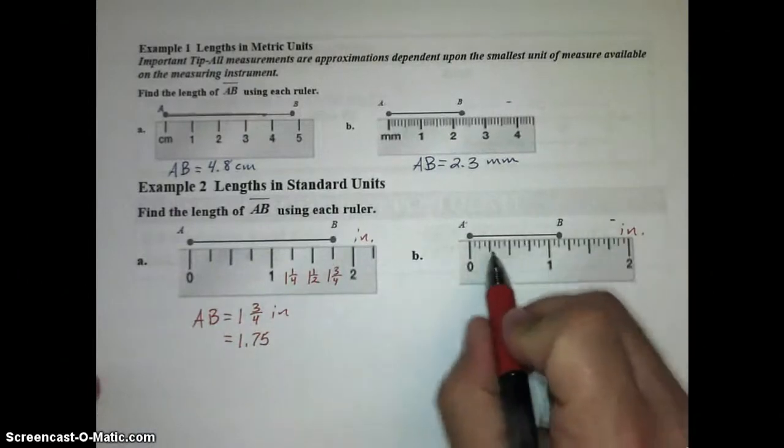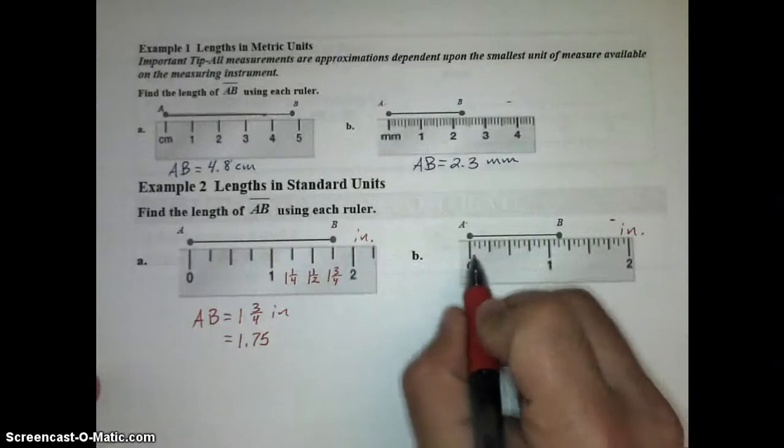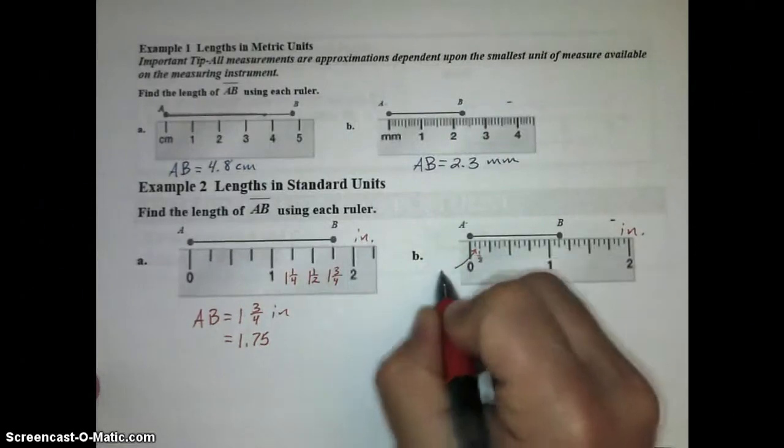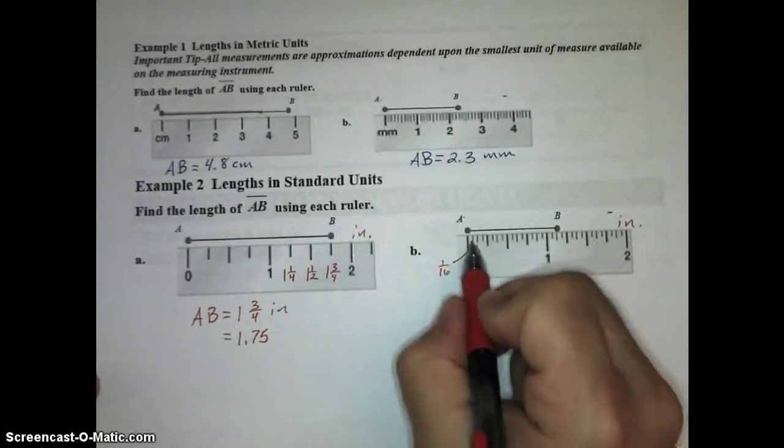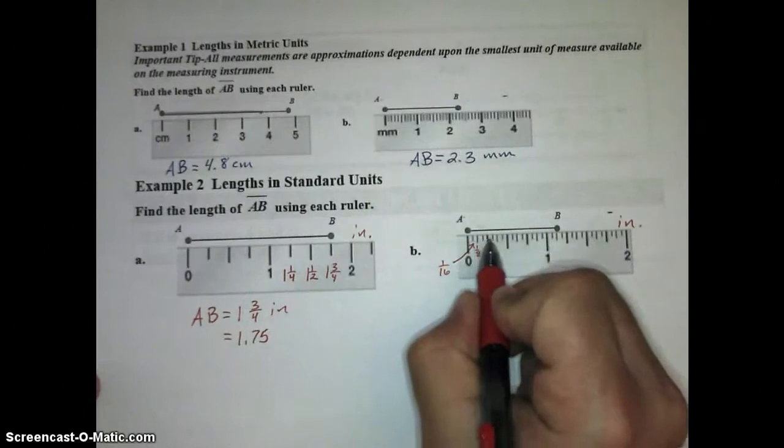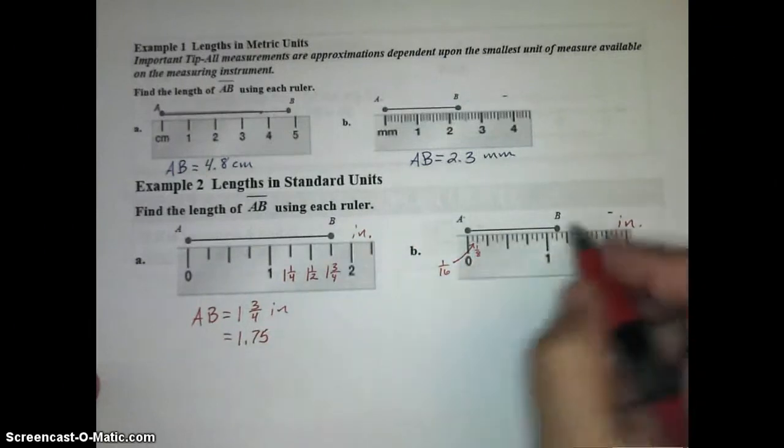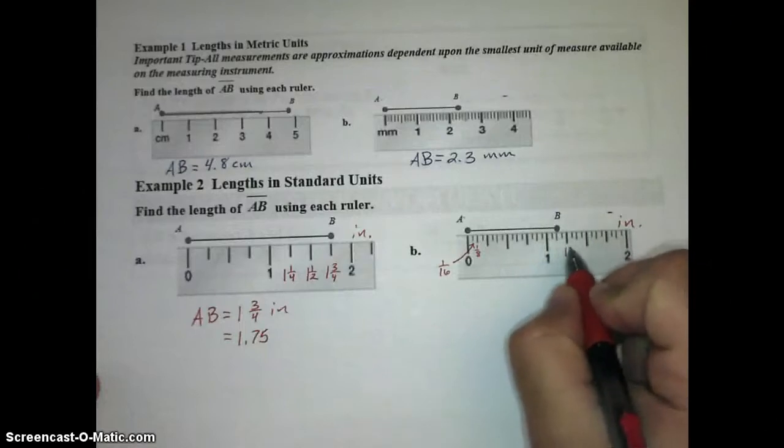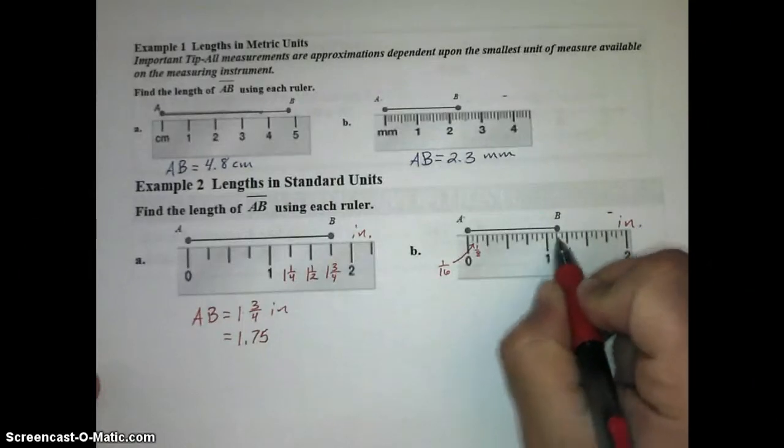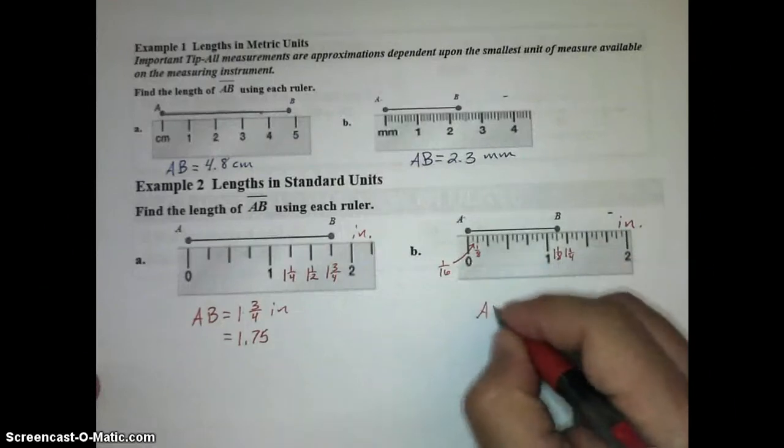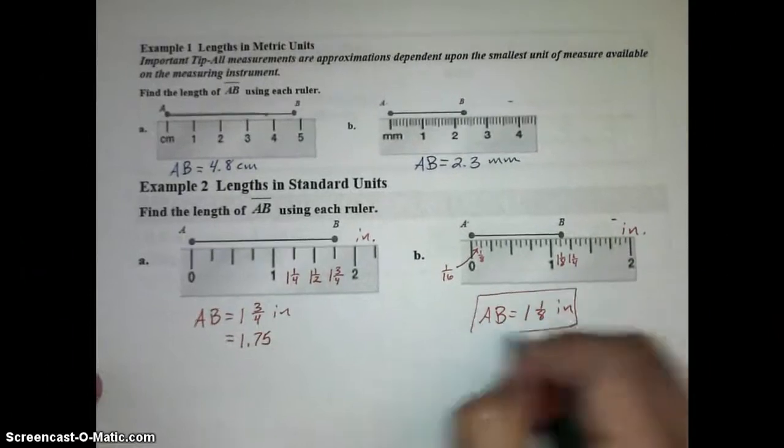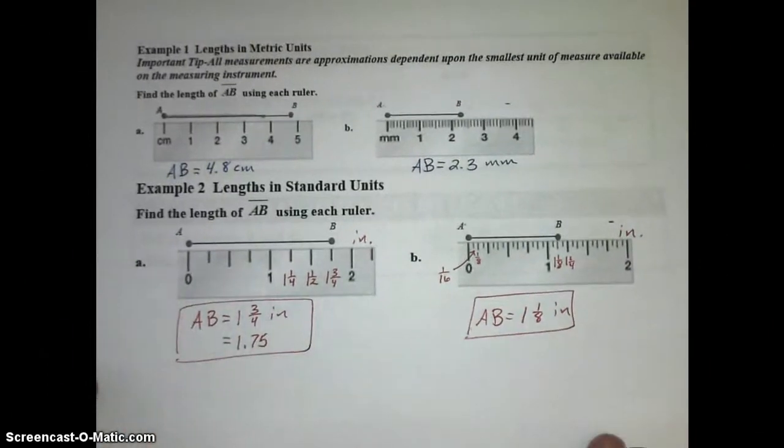So let's take a look here. Now if every quarter of an inch is marked out like this, then halfway between 0 and 1 fourth is 1 eighth. And halfway between 0 and 1 eighth, those little tiny marks are a sixteenth of an inch. So if I was to count by this, I would count up 16 marks before I got to 1 full inch. So here we are a little ways beyond 1 inch. This is 1 and 1 fourth. So halfway between 1 and 1 fourth is 1 and 1 eighth. So AB in this case is 1 and 1 eighth of an inch.